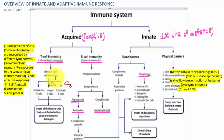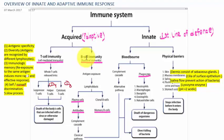T cells are divisible into cytotoxic T cells, helper T cells, and regulatory T cells. They all result in the killing of body cells that are infected with a virus or are otherwise damaged. If the immune response involves B cells, it is called B cell immunity, also known as humoral immunity. It requires antigen exposure via an antigen-presenting cell. B cells are divisible into memory cells and plasma cells, and plasma cells are the only ones that produce antibodies.